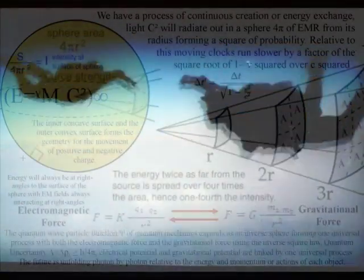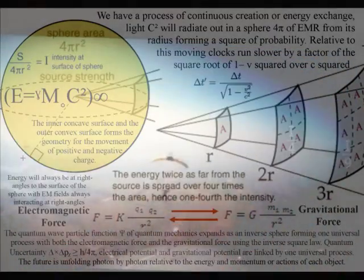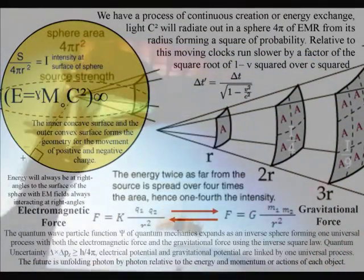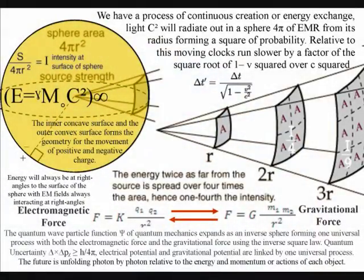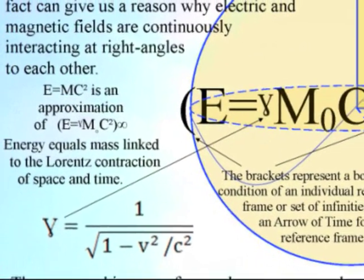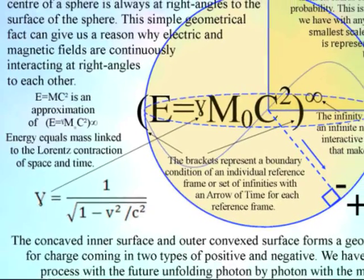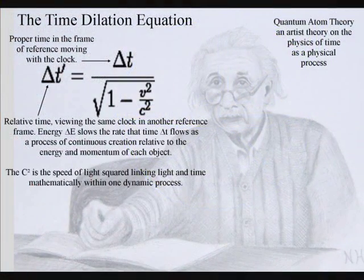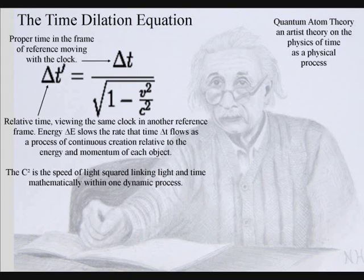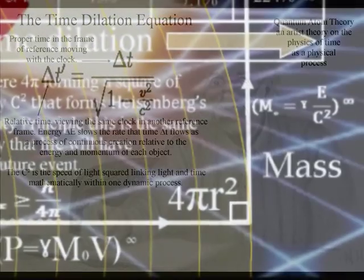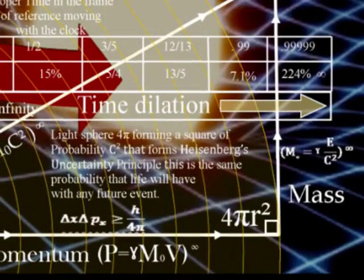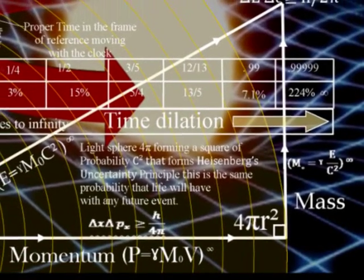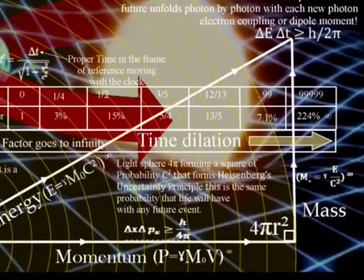This can all be based on just one equation. Energy equals mass, times the speed of light squared, is the most famous equation in physics, but could this equation give us an objective understanding of the universe? All we have to do, is place the Lorentz contraction of space and time, between the energy and mass. Therefore, the greater the energy, the greater the contraction of space, and the slower time will run. Mass will increase relative to this, and each reference frame can be seen as a vortex in space and time, formed by a process of continuous creation, or continuous energy exchange.